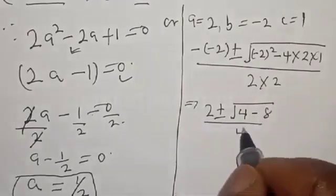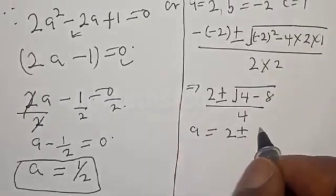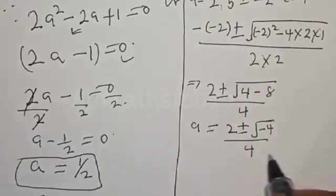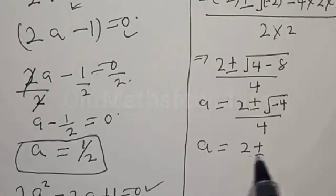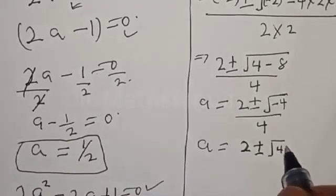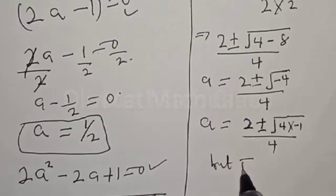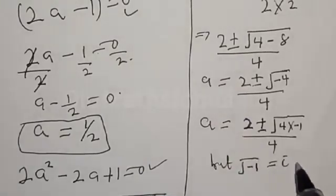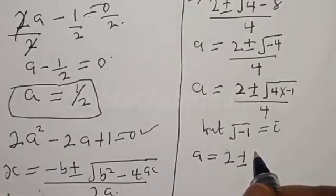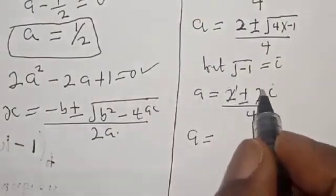Simplifying: 2 plus or minus square root of 4 minus 8, all over 4. That gives 2 plus or minus square root of minus 4, over 4. We can write this as 2 plus or minus square root of 4 multiplied by minus 1, over 4, which equals 2 plus or minus 2i over 4.